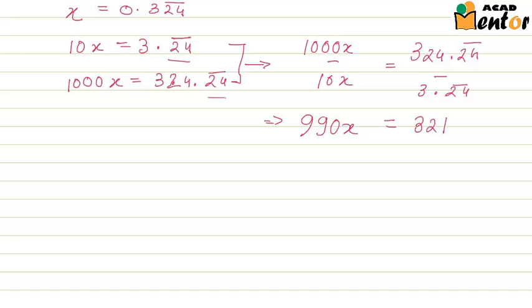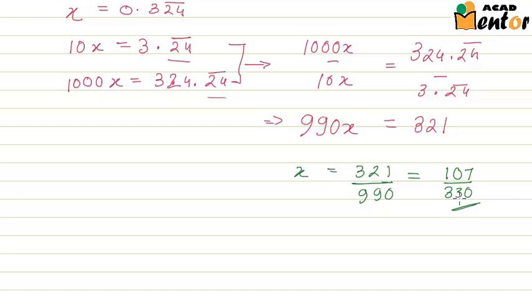This leaves us with x is equal to 321 upon 990. Now you can reduce this to the simplest form by dividing it by 3, and you will get 107 upon 330. So this means that the P by Q representation of 0.324 bar is nothing but 107 by 330.